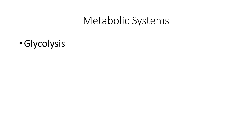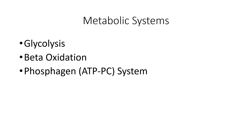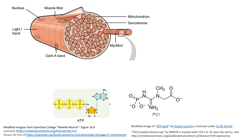Muscle fibers have many different metabolic systems they can use for creating ATP. They can break glucose down through a process known as glycolysis, or break fatty acids down through a process known as beta-oxidation. The specific system we're going to look at right now is what's known as the phosphagen, or ATP-PC system, which is one of a variety of metabolic systems within muscle fibers that serves the purpose of creating ATP.